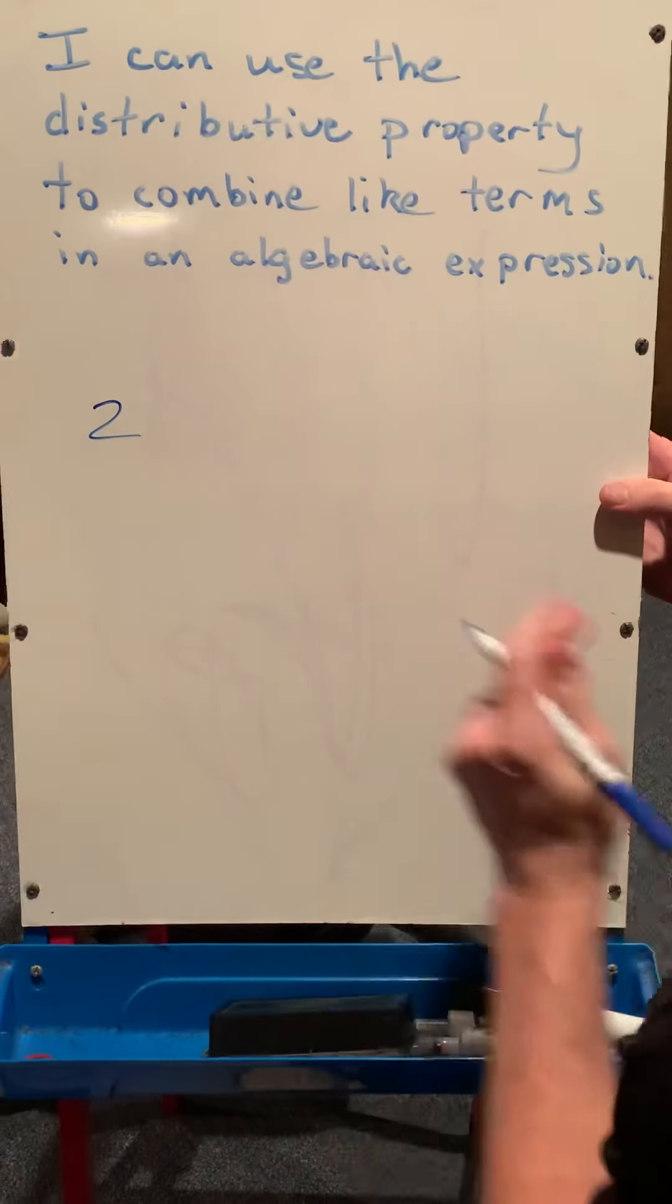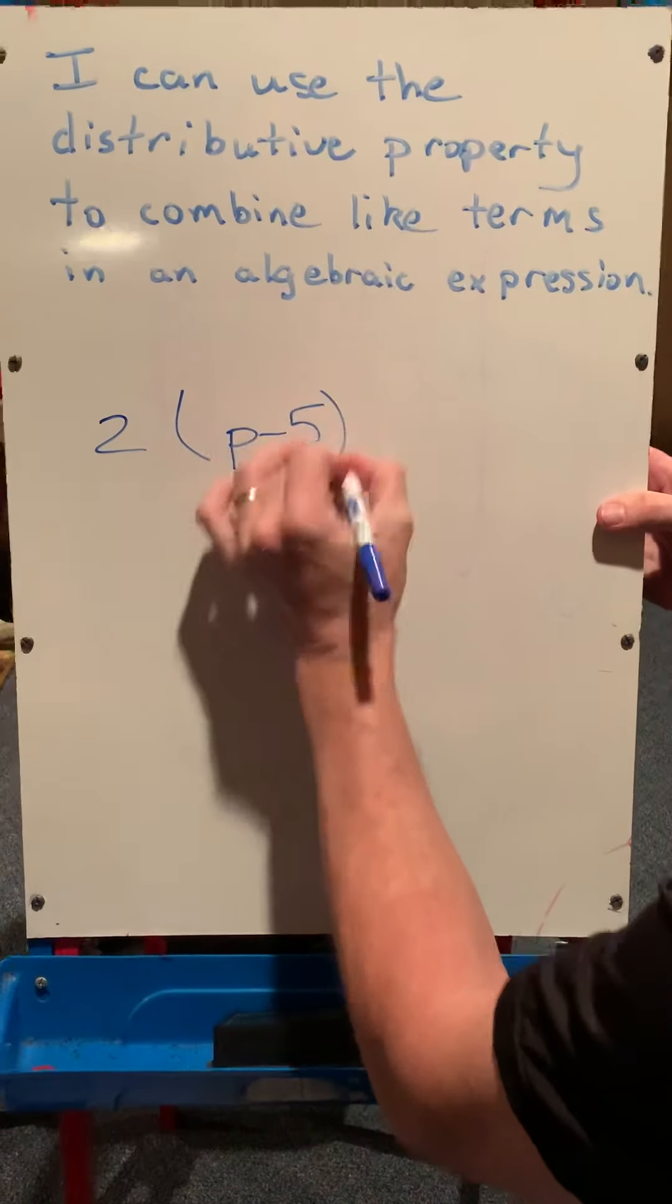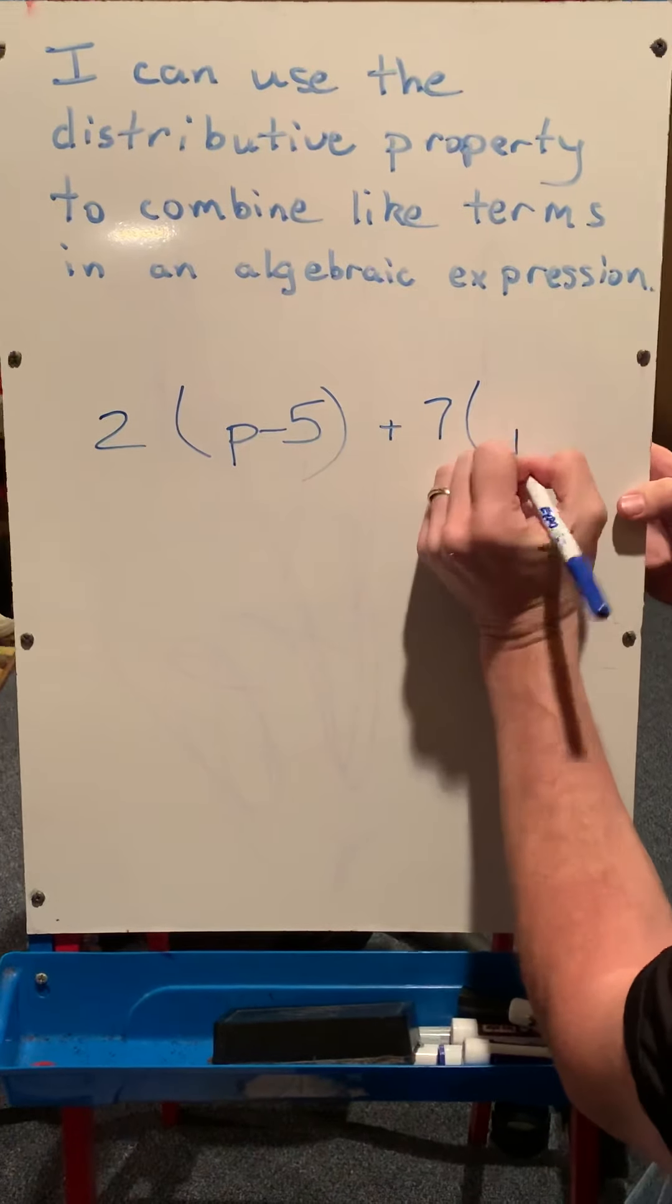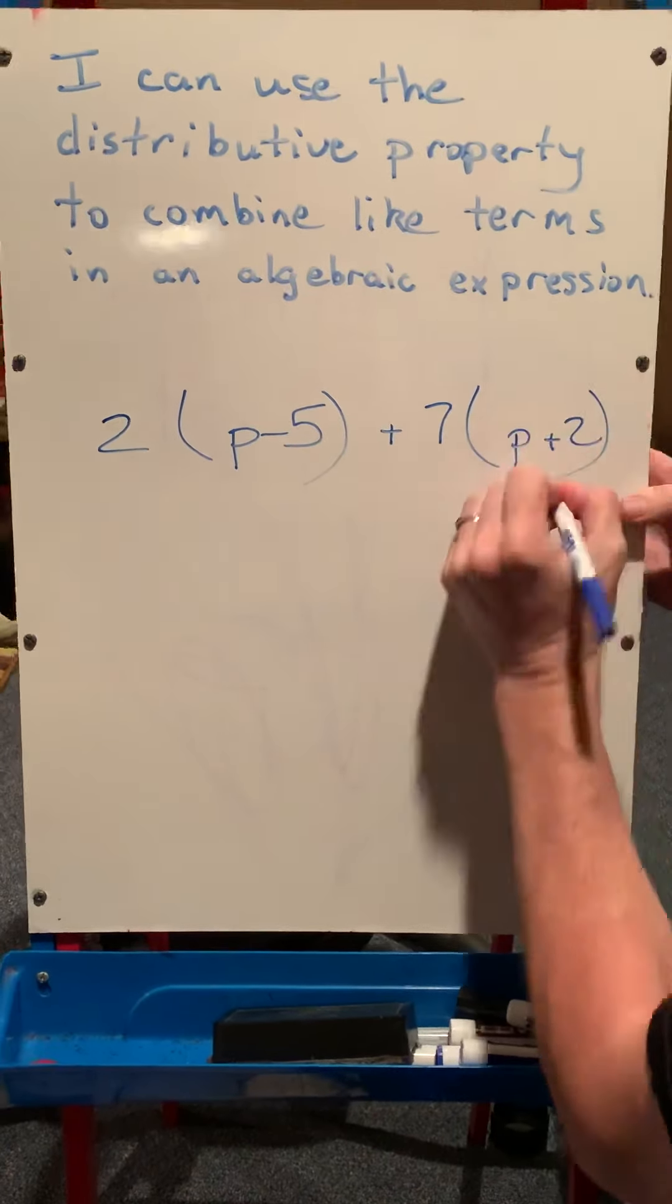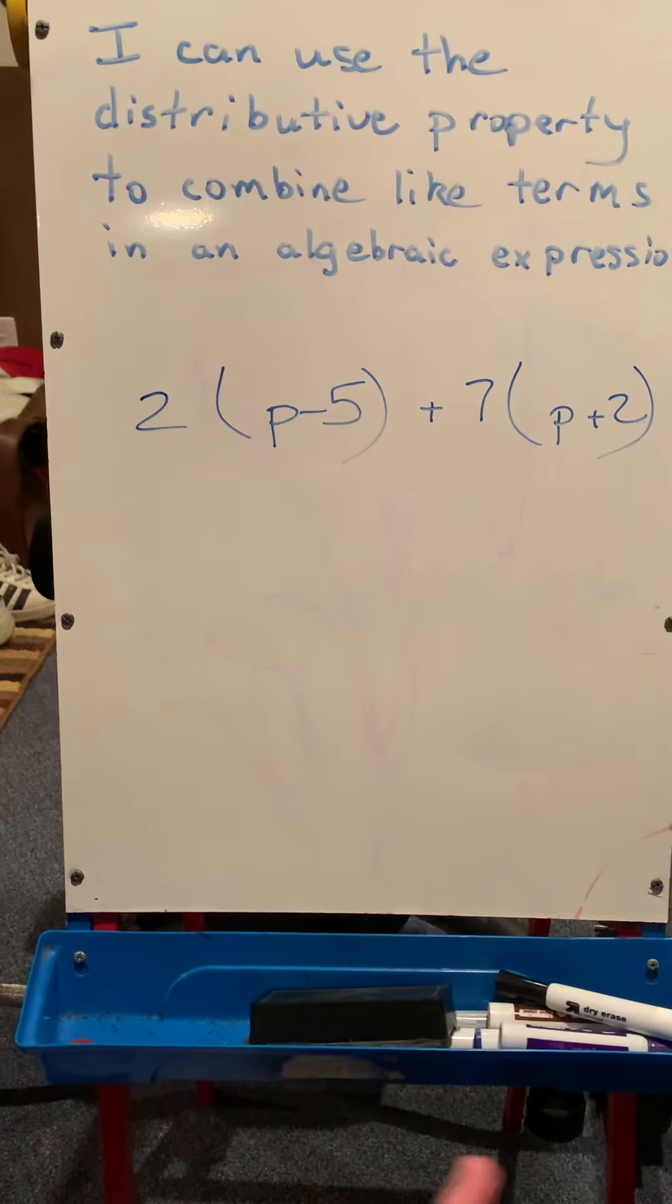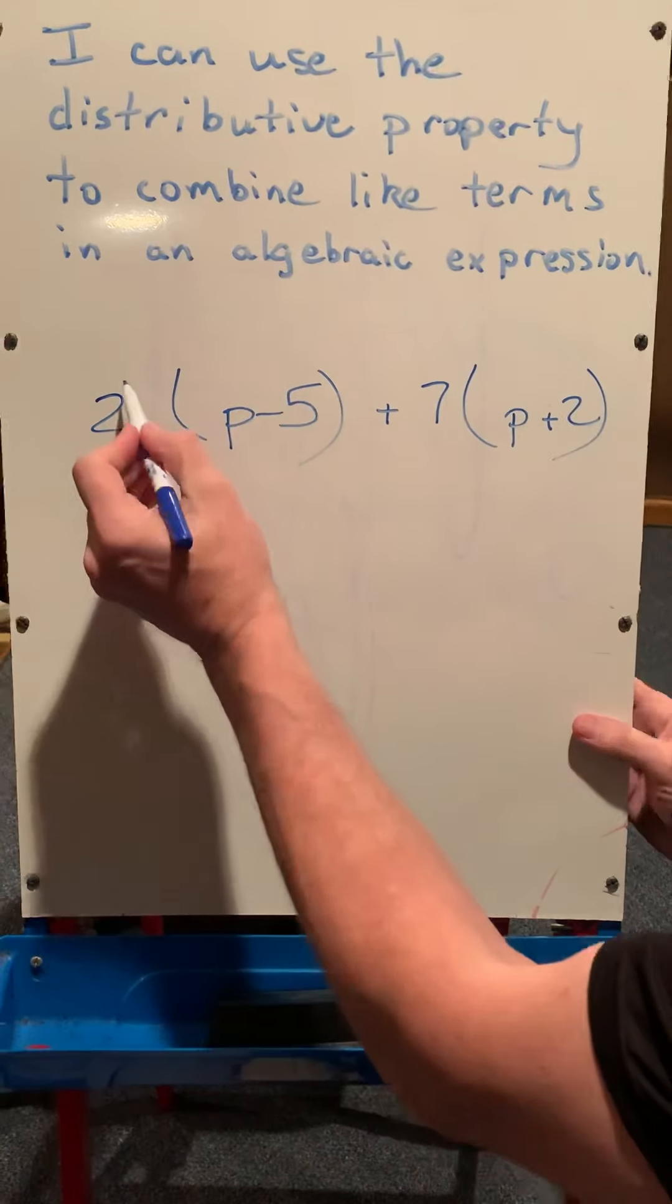Okay, so the second example is 2 times the quantity of p minus 5 plus 7 times the quantity of p plus 2. Okay, I just made this a little bit more challenging for you with some negatives. The situation will be a little bit different here, you'll see after we distribute.